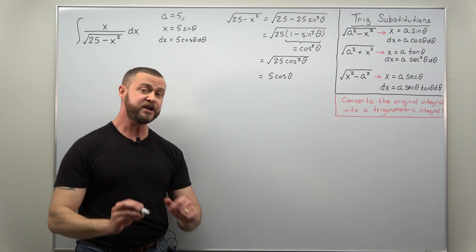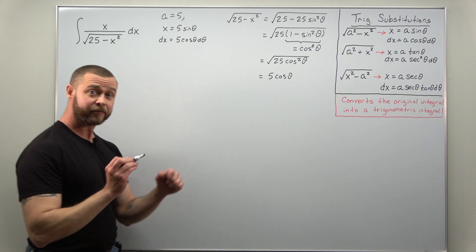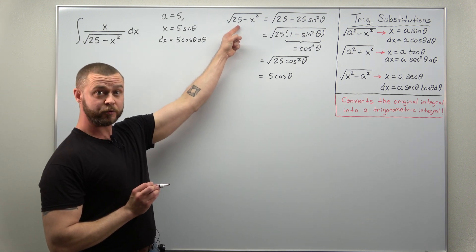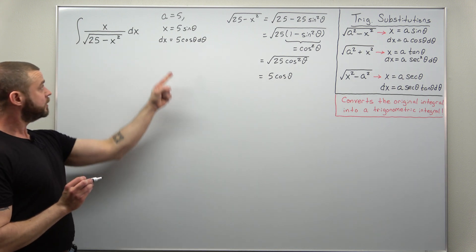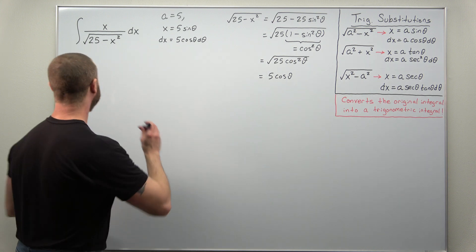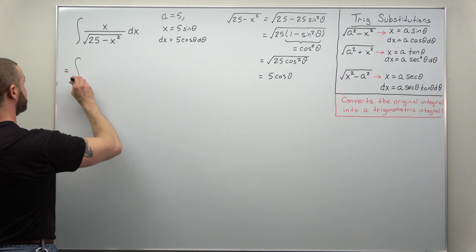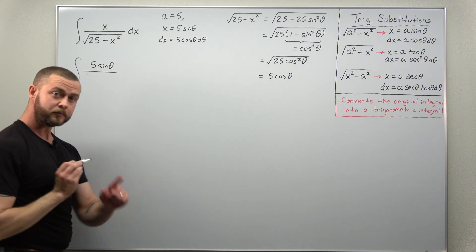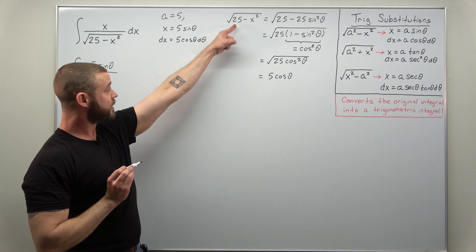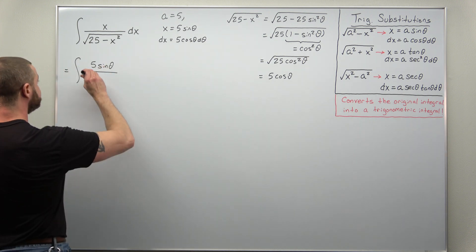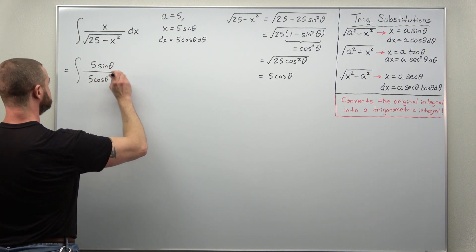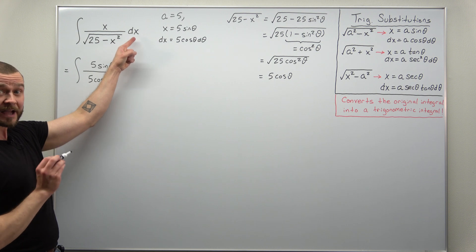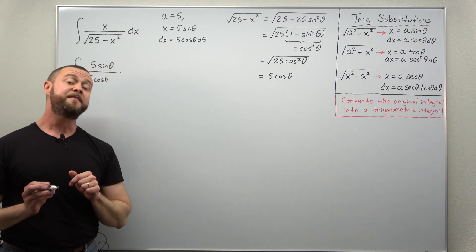Our goal is achieved — the square root is now eliminated. We plug everything back in: all x's are replaced with 5 sine theta, the square root simplifies to 5 cosine theta, and don't forget your differential dx, which is replaced with 5 cosine theta d theta.